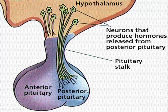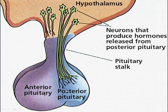The posterior lobe of the pituitary gland is smaller than the anterior lobe and stores only two hormones that are secreted by hypothalamic neurons. These neurons connect the posterior lobe directly to the hypothalamus via the infundibulum and produce hormones that are released from the posterior pituitary. Remember, the posterior pituitary gland stores hormones but does not produce any hormones itself — it stores hormones produced by neurons from the hypothalamus.